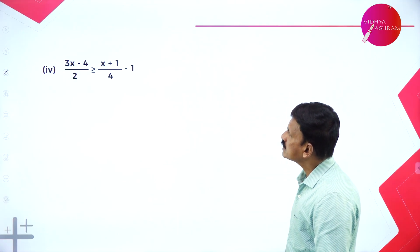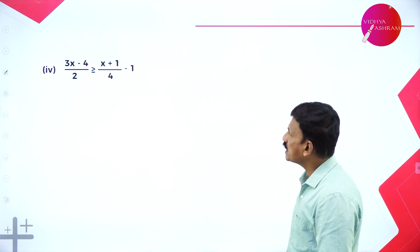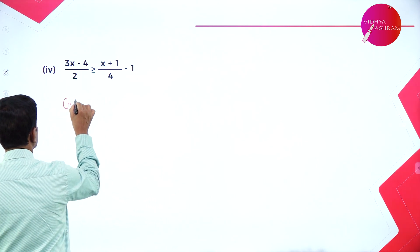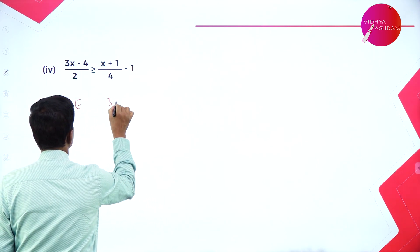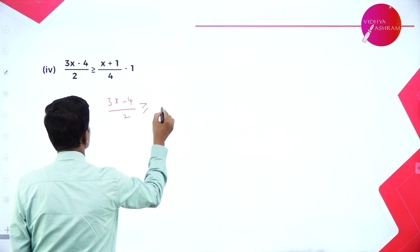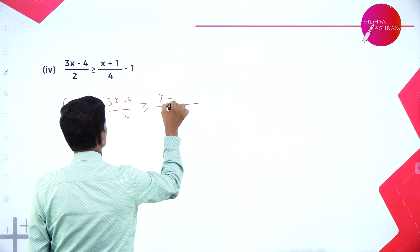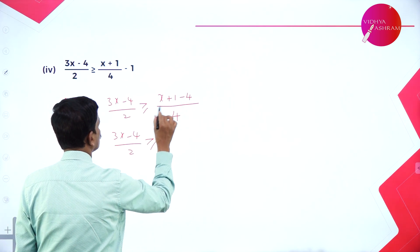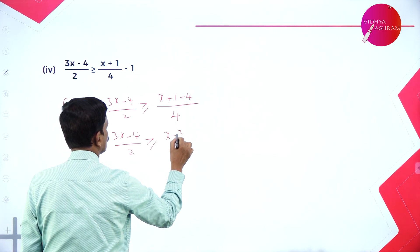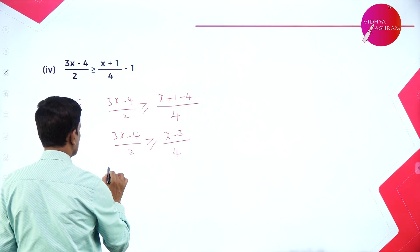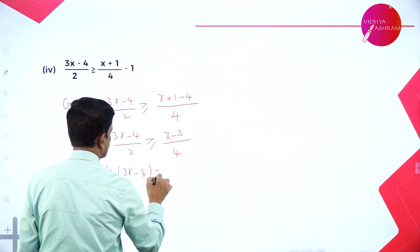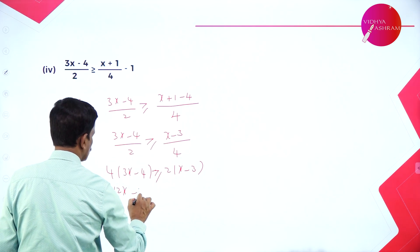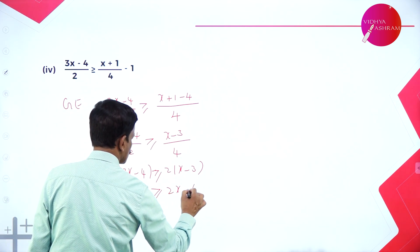Next problem: (3x - 4)/2 ≥ (x + 1)/4 - 1. Taking LCM of 4, the right-hand side becomes (x + 1 - 4)/4 = (x - 3)/4. Multiplying both sides by 4: 4(3x - 4) ≥ 2(x - 3), giving 12x - 16 ≥ 2x - 6.